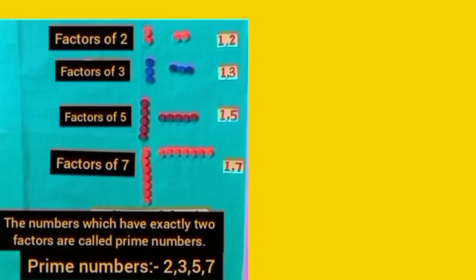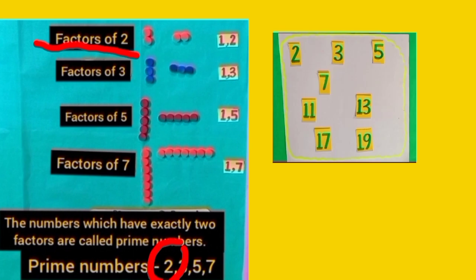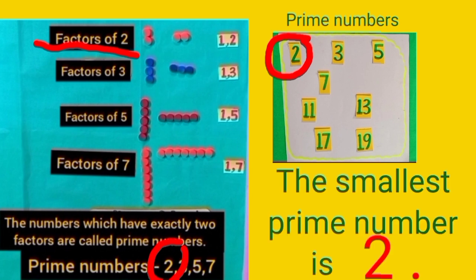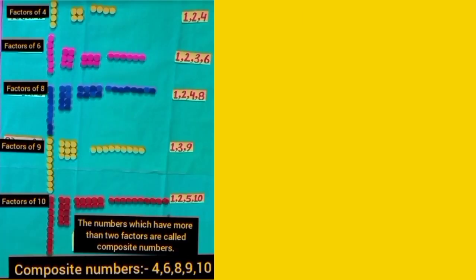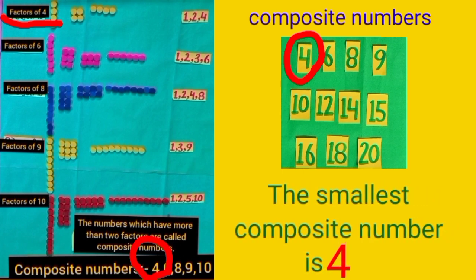Dear students, yesterday we learned prime numbers between 1 to 10 and saw that 2 is the smallest of all. Today we have also confirmed that 2 is the smallest of all. So, the smallest prime number is 2. Yesterday, when we learned composite numbers, we saw that 4 is the smallest of all, and today as well. So, the smallest composite number is 4.